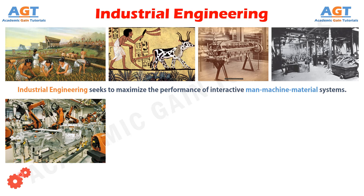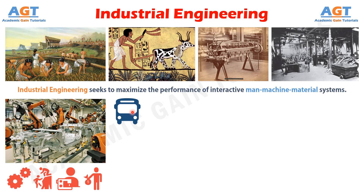Industrial engineering has evolved over the last century as a broad profession concerned with designing effective systems and developing the best processes, with the purpose of integrating people, machine and material resources for improved overall effectiveness of organizations and delivering products and services to the consumer. The focus is on manufacturing systems, but other systems in areas such as transportation, communication, and finance are also given due importance.